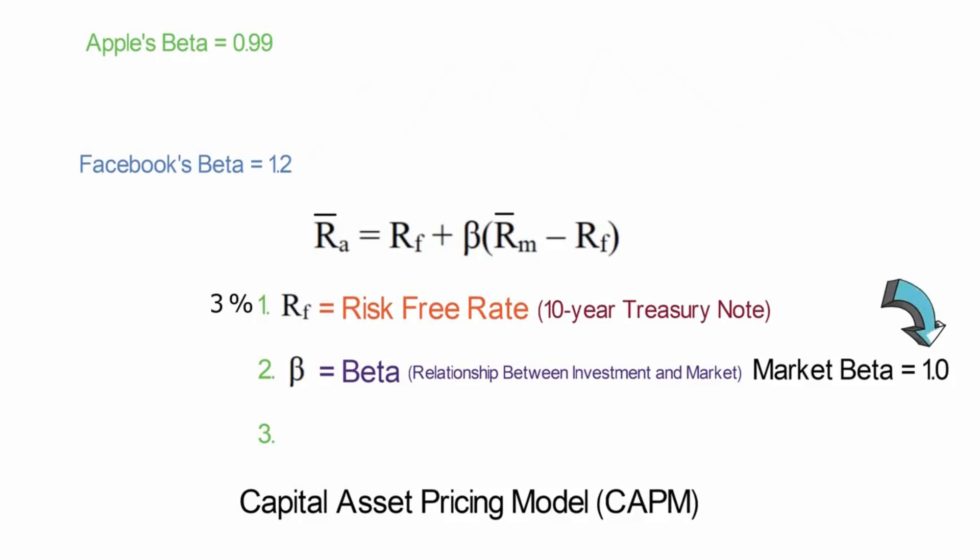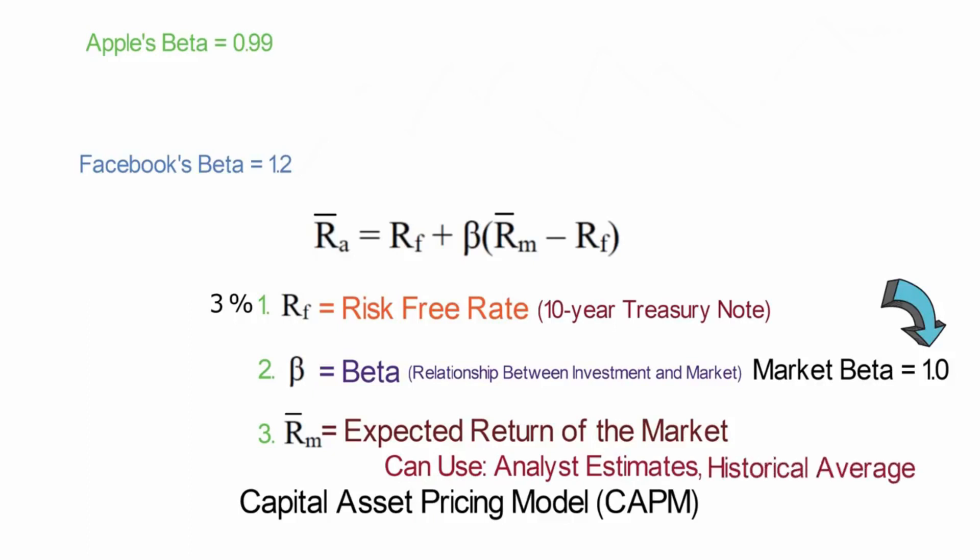The final input in our formula is the expected return of the stock market. Now, coming up with this number isn't always clear. Some research companies publish what they expect long-term market returns to be. We can also use a historical average. For our case, we are going to use the average of the past 10 years, which is about 9% per year.